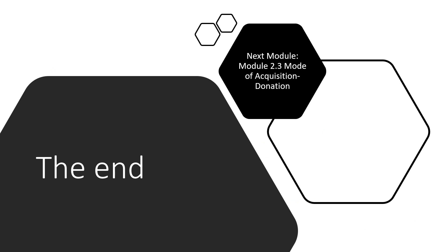That's the end of module 2.3. Our next module will discuss the mode of acquisition by donation — either donated by existing shareholders, donated by an individual with no connection to the firm, or by the government, which is called government grants. If you have questions, please send a message through Blackboard or Messenger. Thank you.